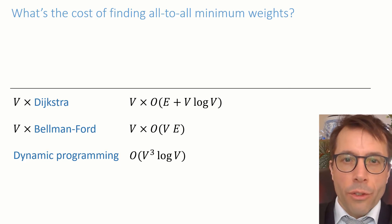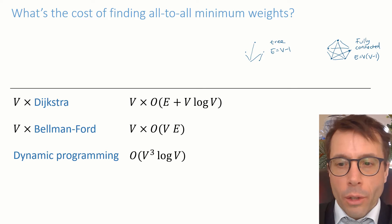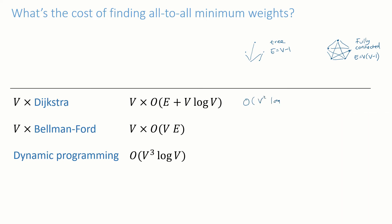To make sense of these different formulas, I find it helpful to see what they say for particular types of graph. Let's look at two extremes. I'll look at a tree which has E equals V minus 1 edges, and I'll look at a fully connected directed graph which has V times V minus 1 edges.